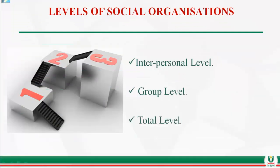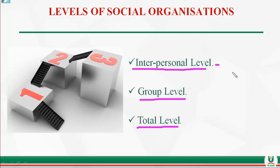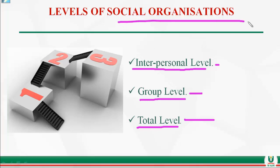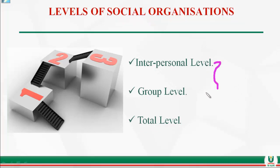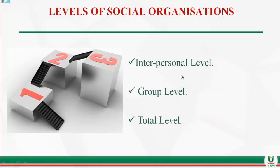There are three levels of social organization: the interpersonal level, the group level, and the total level. The interpersonal level deals with one-on-one relationships between individuals. The group level involves a number of people interacting together. The total level concerns society as a whole — a composition of both individuals and groups.